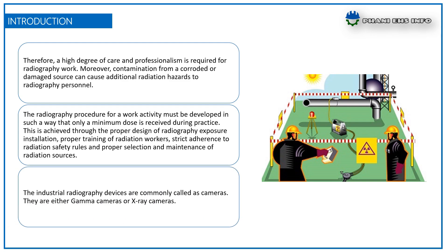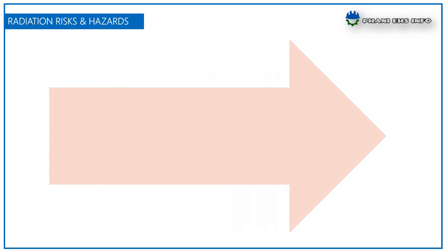The industrial radiography devices are commonly called cameras. They are either gamma cameras or x-ray cameras. Before going to talk about the safety of the radiography, let us have a look at radiation exposure risks.